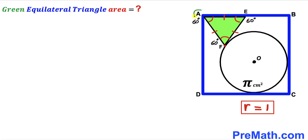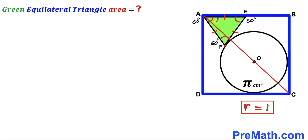In this next step, I'm going to connect vertices A and C. We can observe that AC is the diagonal of the blue square, so this angle is 45 degrees. Since the diagonal gives 45 degrees and the equilateral triangle angle is 60 degrees, the small remaining angle is 60 − 45 = 15 degrees. So this tiny angle turns out to be 15 degrees.